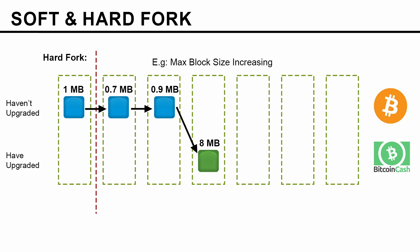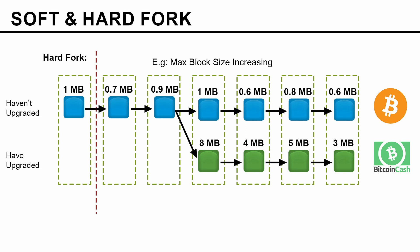Now let's say the next block is found by a miner from the group who have upgraded their software as per the new rule, and the block size is 8 megabyte. This block follows the new rule of Bitcoin Cash, but it does not follow the rules of Bitcoin as the maximum block size limit for Bitcoin is 1 megabyte. So the miners who haven't upgraded their software will reject this 8 megabyte block. They will not accept it into their chain and will continue their own mining. They find a block under the limit — let's say 1 megabyte — which follows both the rules of Bitcoin and Bitcoin Cash. This is where the split happens.